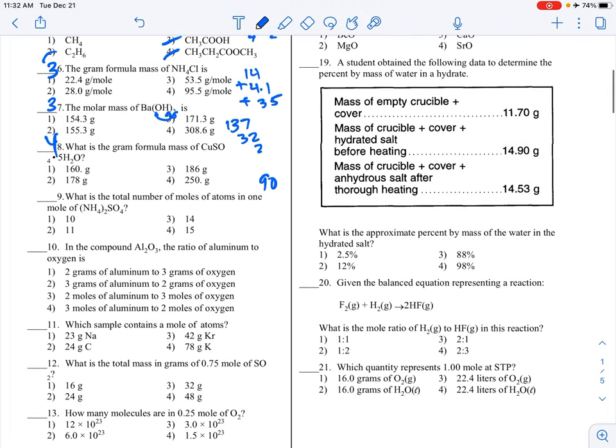What is the total number of moles of atoms? We didn't talk about this too much. We just count up the number of atoms. So 2 nitrogens and 8 hydrogens, that's 10 plus 1 sulfur is 11 plus 4 is 15. That's choice 4.